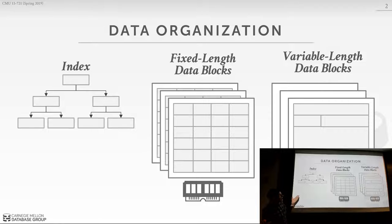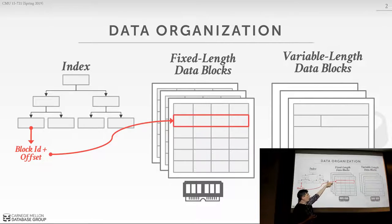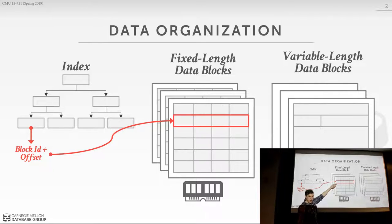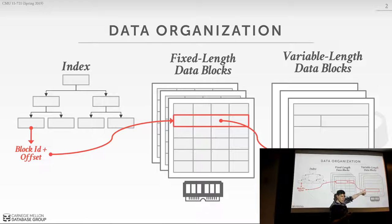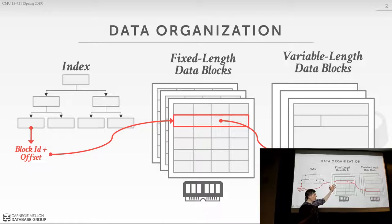This is what an in-memory database looks like. We have an index with pointers, which can be block IDs and offsets, that then point to some tuple within the offset of a block in the fixed-length data blocks. I'm showing this as a row store, but the idea still applies to a column store. If you have any attributes larger than 64 bits or variable length, you don't want to store them inline in the fixed-length data blocks — you just have a 64-bit pointer to some offset within a variable-length data block. We'll explain why we have to do this today.